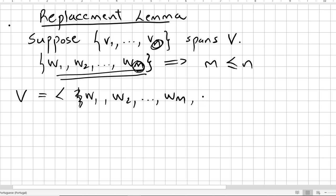And the v's will be v_i1, v_i2, up to v_i(n-m), n minus m.